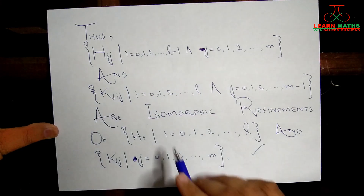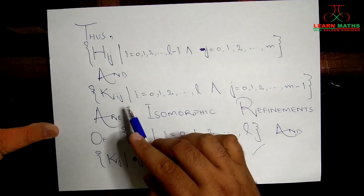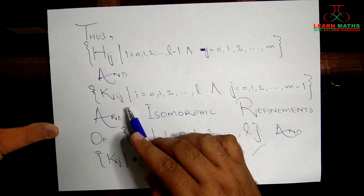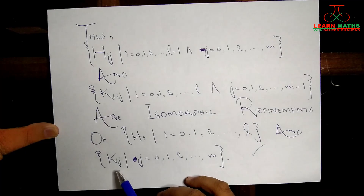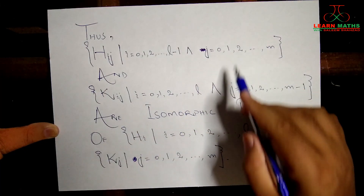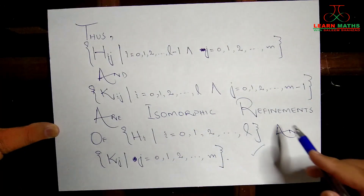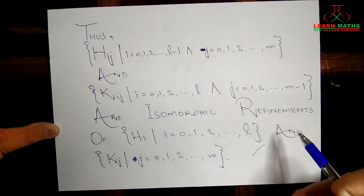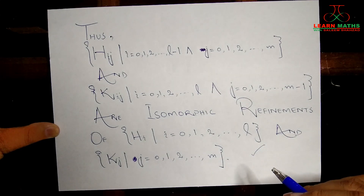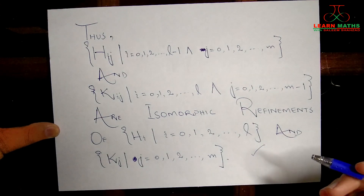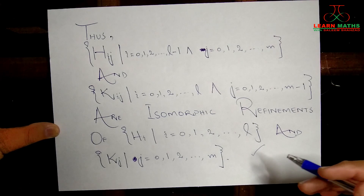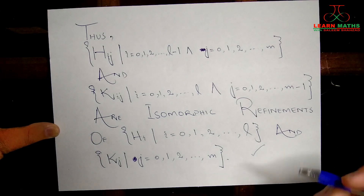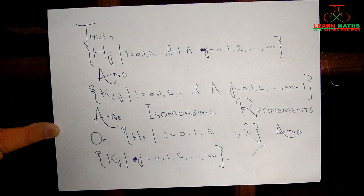We have successfully proved that the refinement of the series H_i and the refinement of the series K_j are isomorphic to each other. Thank you so much for watching the complete video. Please subscribe to my channel, like and share this video, and don't forget to hit the bell icon so you don't miss any updates.